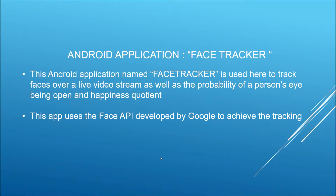The last part of my project is the Android application I made using the Face API from Google, built for Marshmallow and made functional for lower versions including Lollipop and Gingerbread. It's called the Face Tracker. The application tracks faces over a live video stream and calculates how wide open or closed a person's eyes are, and how happy the person is based on their smile — all over a live video feed.